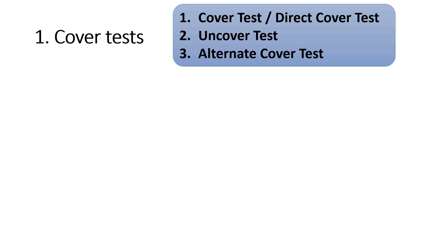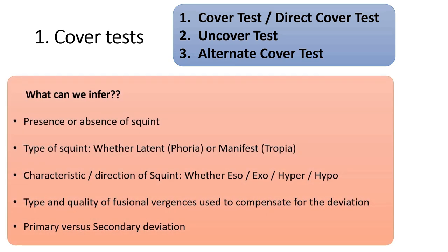The first test for squint evaluation is the cover test, which is very important to understand in detail. It includes three tests: the cover test or direct cover test, the uncover test, and the alternate cover test. With the cover test done correctly, we can determine: firstly, whether squint is present or absent; secondly, whether it is latent or manifest; thirdly, the characteristic and direction — esotropia, exotropia, hypertropia, or hypotropia; fourthly, the type and quality of fusional vergences; and fifthly, primary versus secondary deviation.